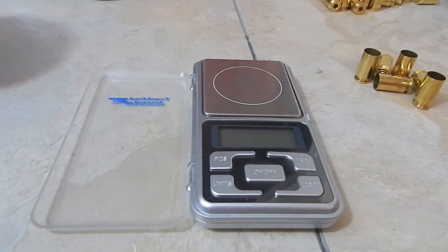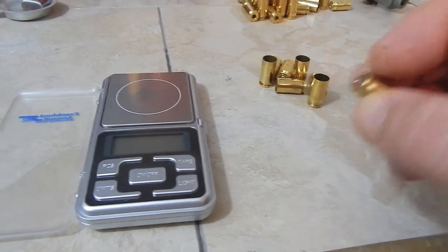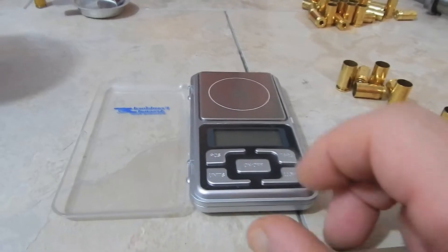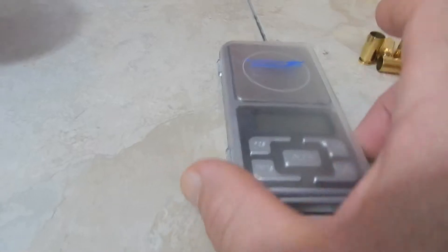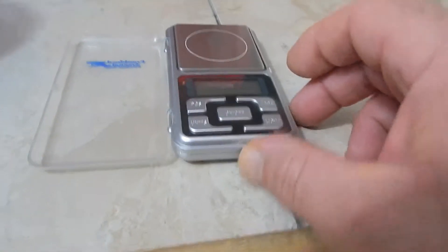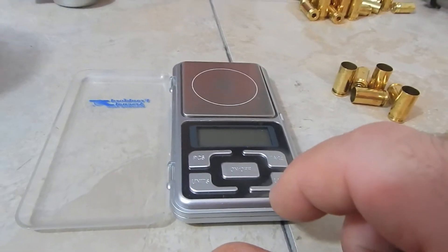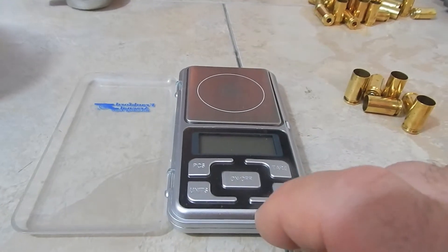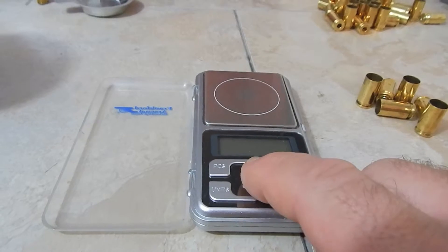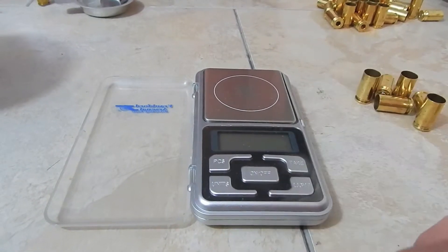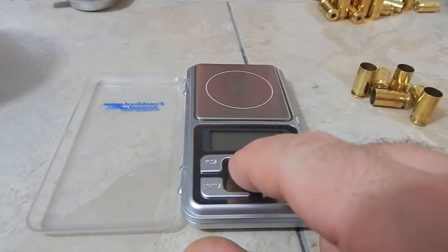I've got some casings with the primer in them, and for this next part we're going to need a scale. I'm using Frankfort Arsenal and I will have the model number and Hornady item number listed at the end of the video on this piece of equipment here. I'm really happy with it.